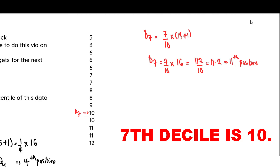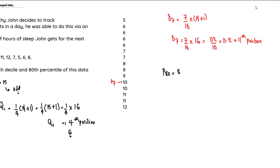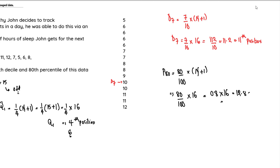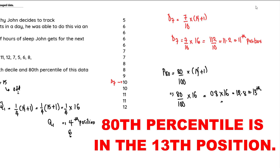The last question is to find the 80th percentile. The formula is: P80 = (80/100) × (n + 1). That equals (80/100) × 16 = 0.8 × 16 = 12.8, which is approximately the 13th position. So our 80th percentile is in the 13th position.